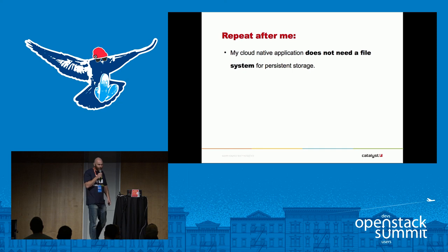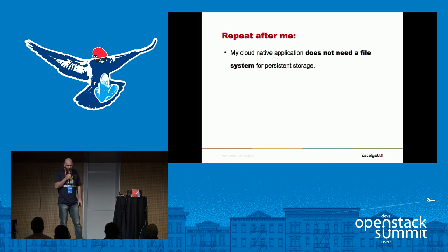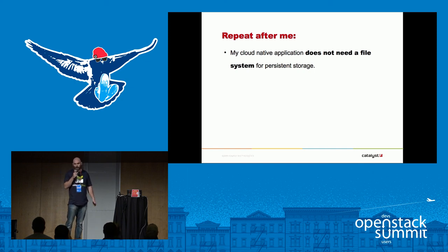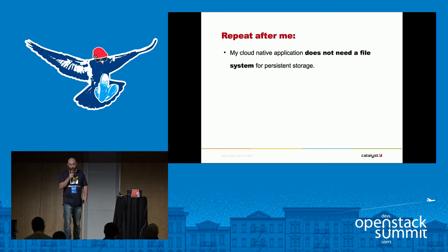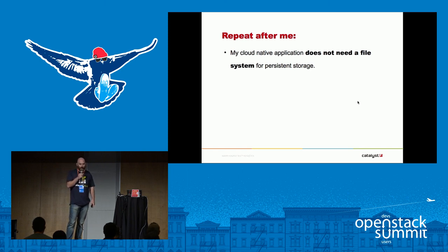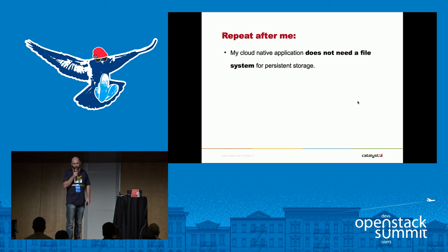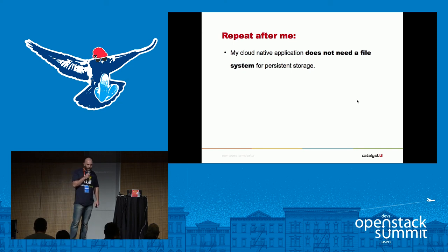This is the perhaps poorly worded cloud native application oath: my cloud native application does not need a file system for persistent storage. Of course many of the ones that still run on our workloads do, but moving forward there are just so many advantages to objects. If you're running an OpenStack cloud yourself, Swift just makes so much more sense — your capacity management, the way you care about the assets, your ability to roll things over, the way you do backups — everything makes a lot of sense, but it is a bit of a radical leap.